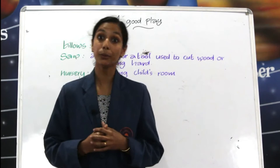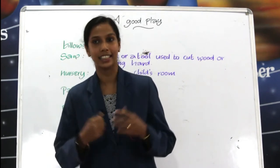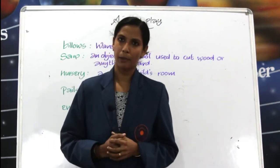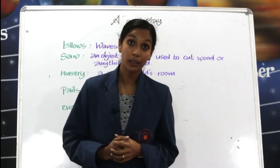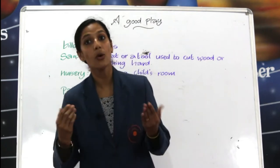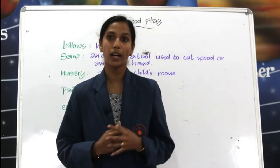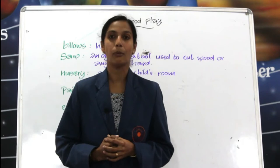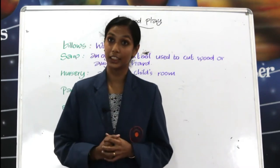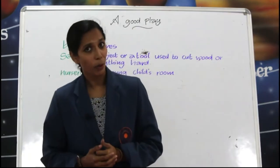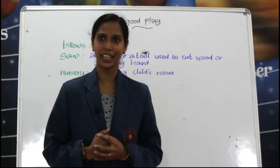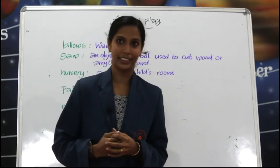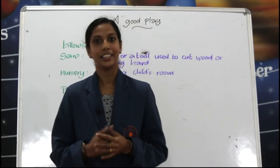Actually, we pretend to make food in the kitchen with the kitchen set, isn't it? Today we are going to learn about a poem called 'A Good Play' by Robert Louis Stevenson. He was born in Scotland and wrote stories of adventure. His most famous book is Treasure Island. In this poem, the poet describes how two little children, Tom and his friend, pretended or imagined that they were sailing in a ship.